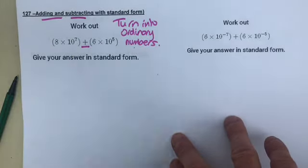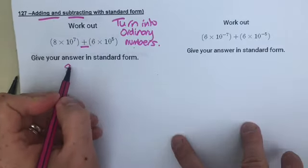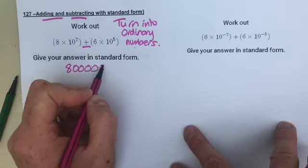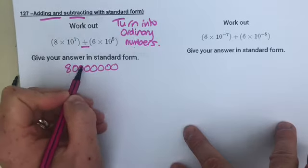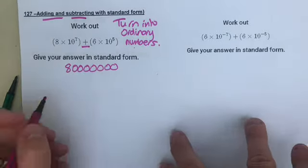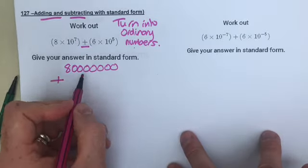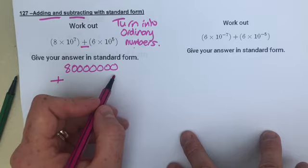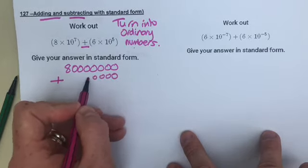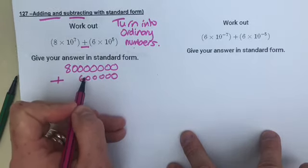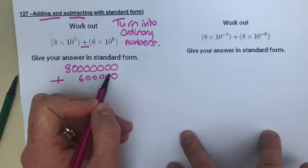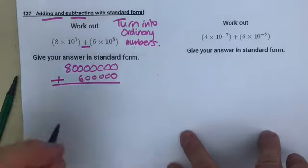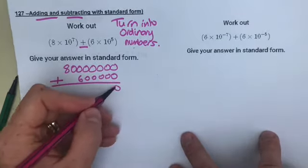Let's do the first one: 8 times 10 to the power of 7. Put the decimal point there and count 1, 2, 3, 4, 5, 6, 7. To that I'm adding 6 times 10 to the power of 5, so I have a 6 and five zeros. I'll line them up so I can do an addition using the column method.